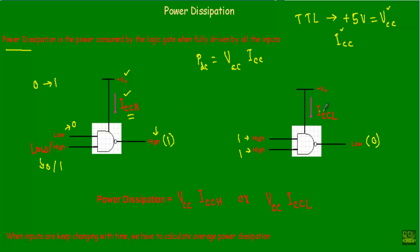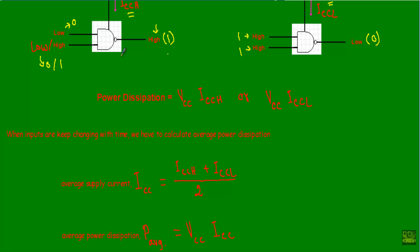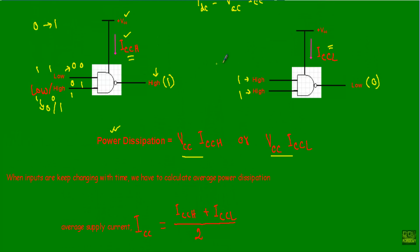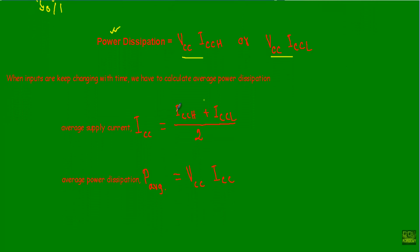I was discussing ICCH and ICCL for fixed inputs. If I design a logic circuit in which the input frequently changes with time — say at one instant it is 01, then 10 or 11 — we cannot apply either formula alone. Because the logic gate will draw both ICCH and ICCL, we must calculate the average supply current: ICC = (ICCH + ICCL) / 2.